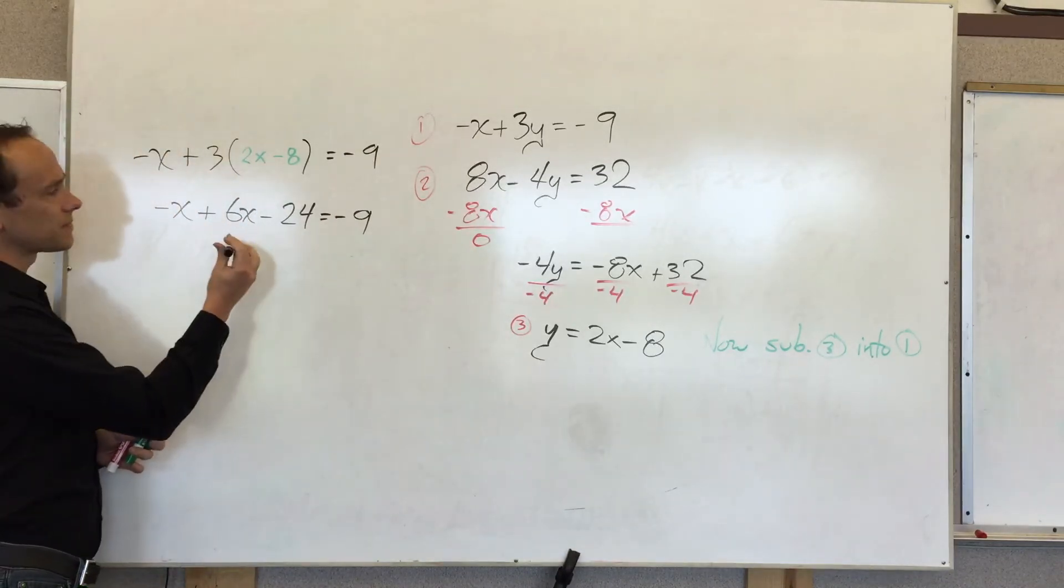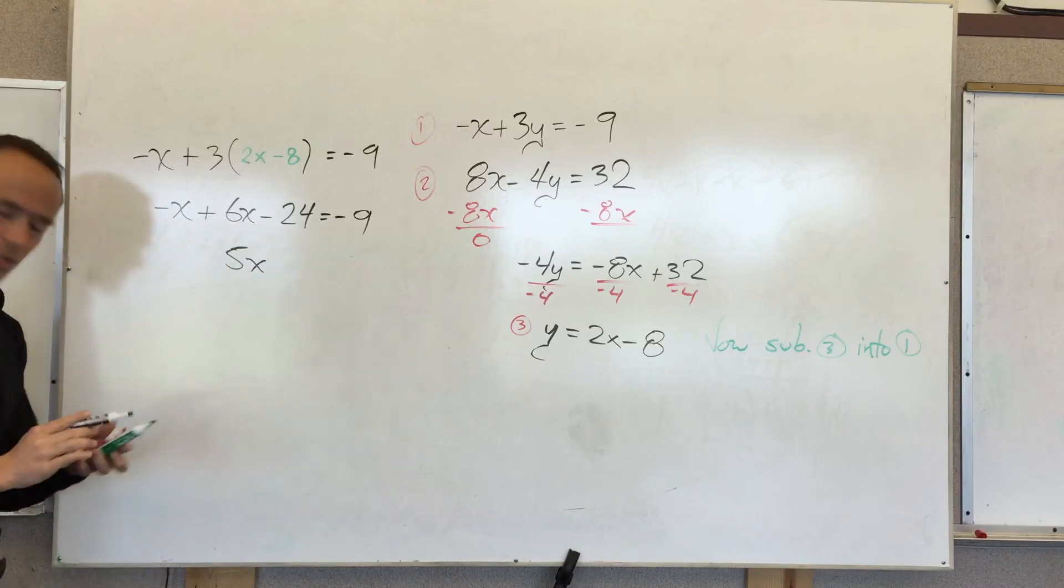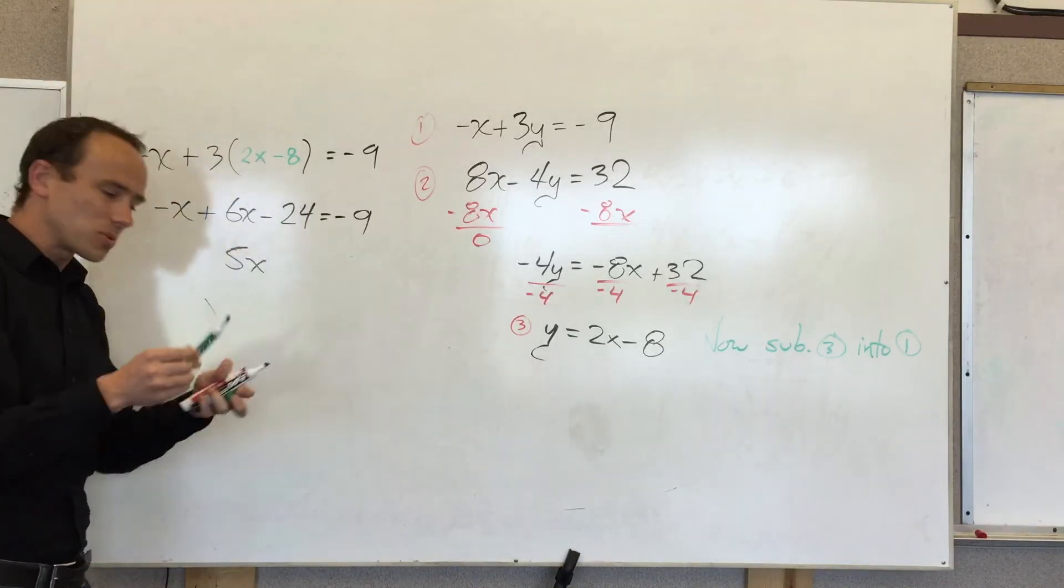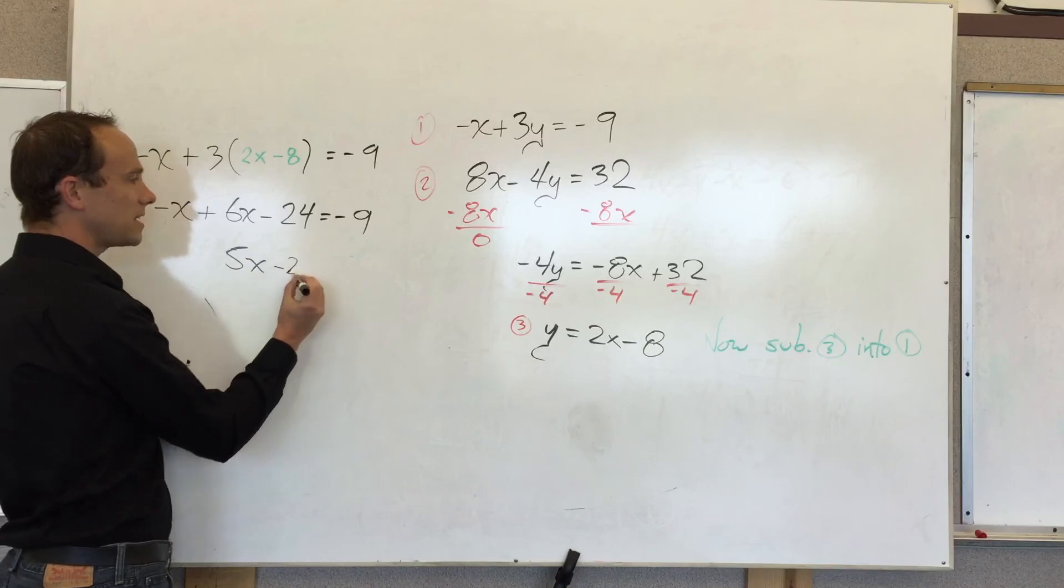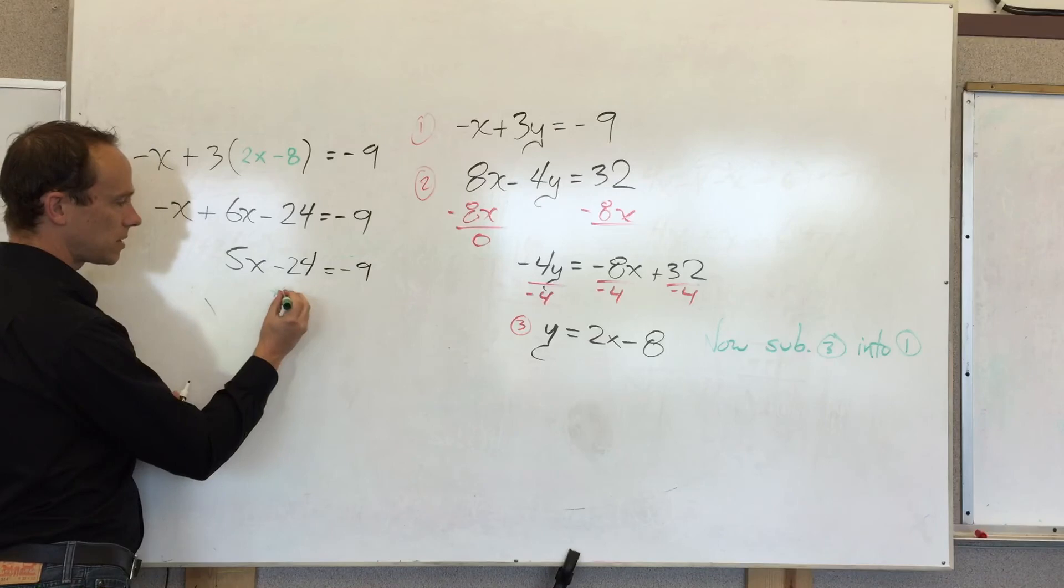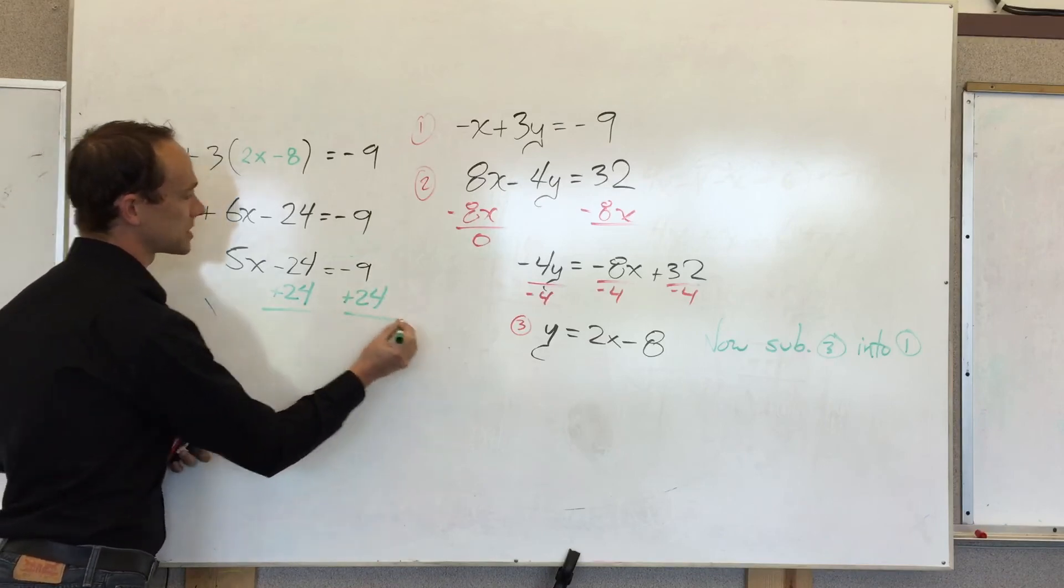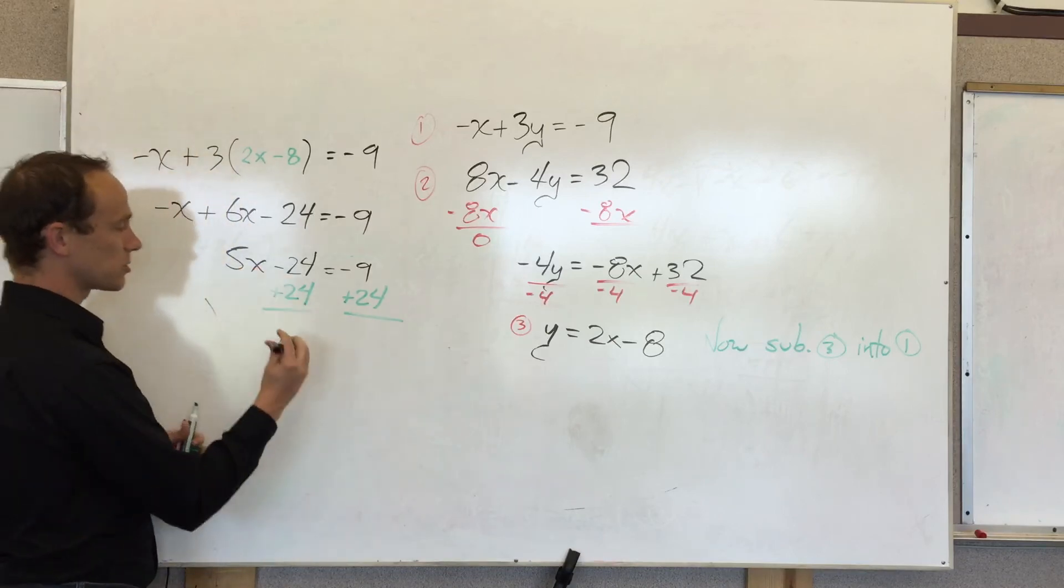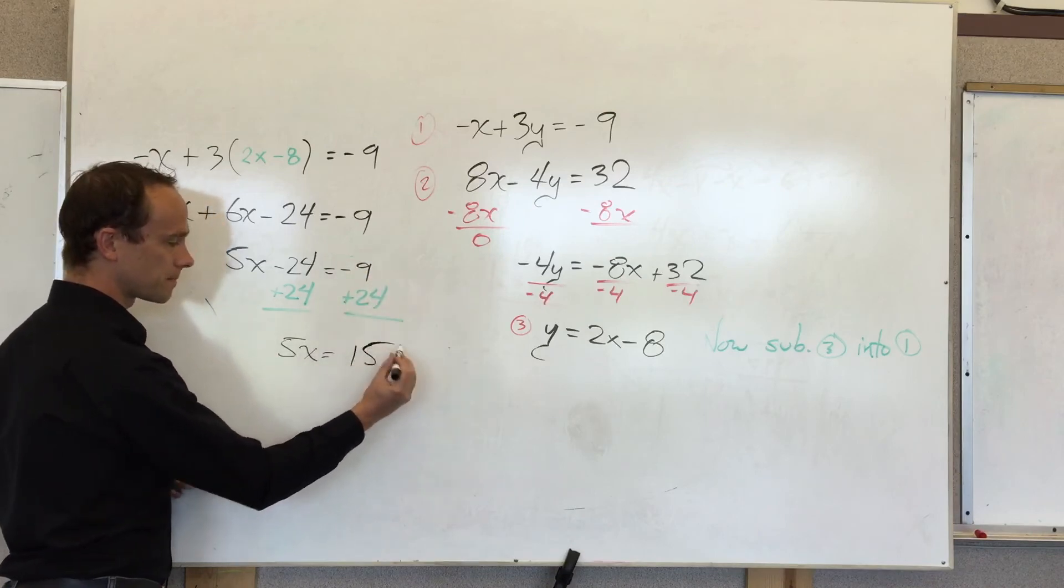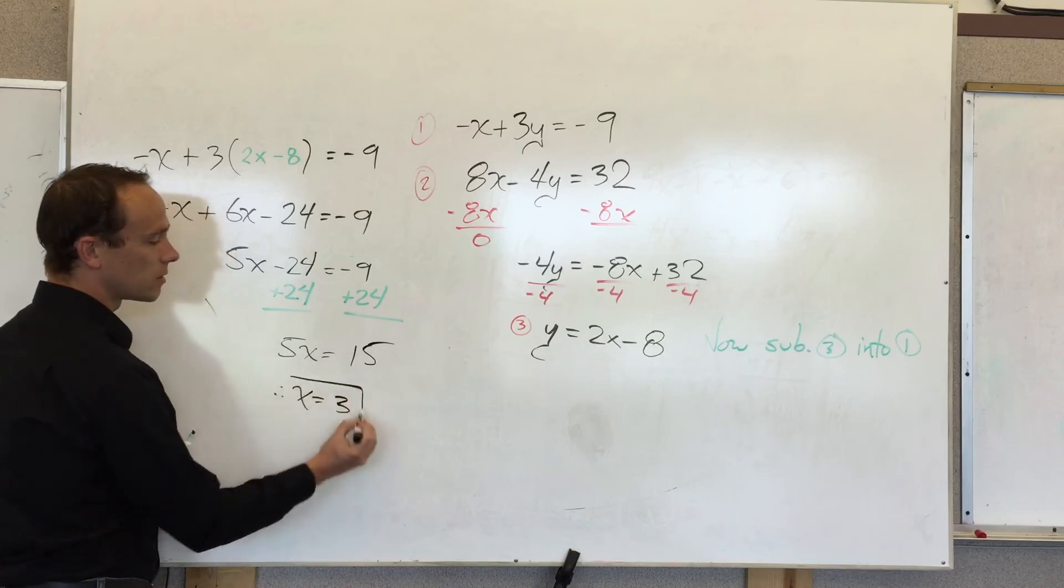Negative x plus 6x is 5x. I've got to add 24 because I want to isolate the variable. Right now, I'm subtracting 24. I might just rewrite that here. So, I'm going to add 24 plus. Oh, man. These markers, they just barely hang on. They're like, I hope this is the last video. And it is. So, we've got 5x is equal to 15. Divide both sides by 5. Therefore, x must equal 3.